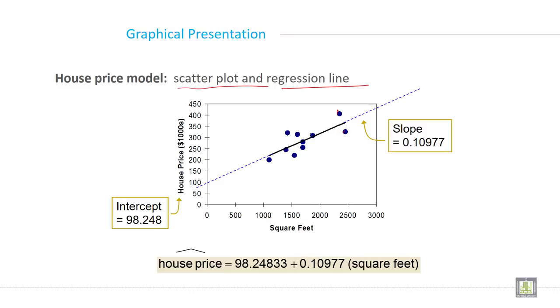So this is the house price model. If you put all the values, this is the regression line. It means there is a direct relationship or positive relationship between house price and the size in square feet. If square feet increase, the house price will go up. This is the interpretation of this data.